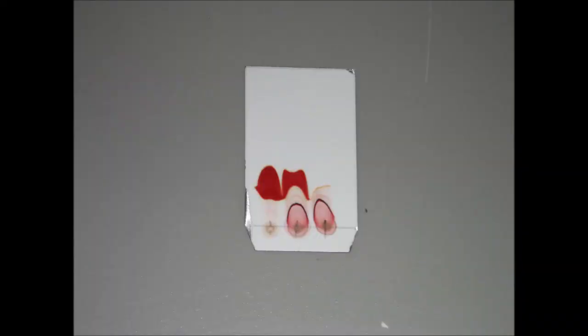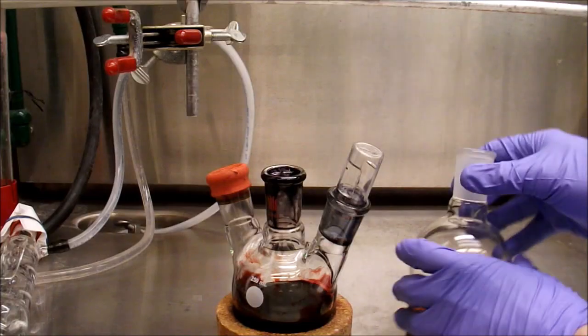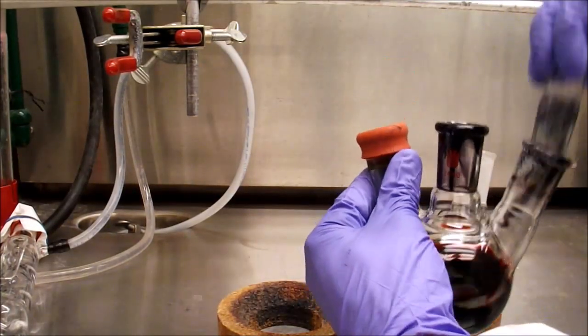After a day at reflux, a TLC is run in dichloromethane. As is my standard method, the left spot is the starting material, the middle is co-spot and the right is the reaction mixture. The TLC shows complete consumption of the starting material.